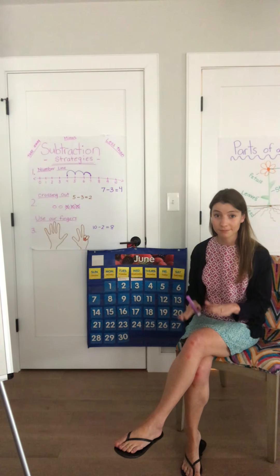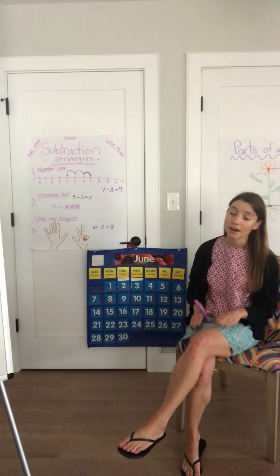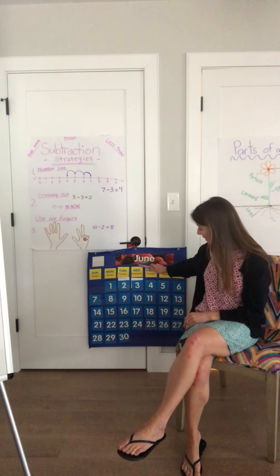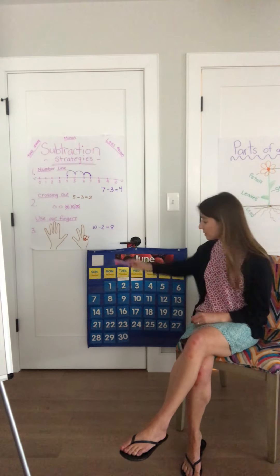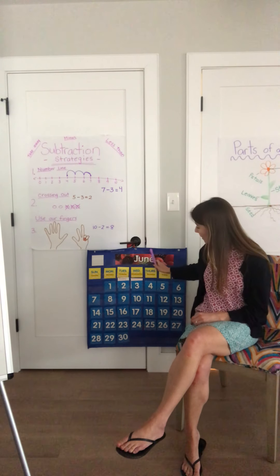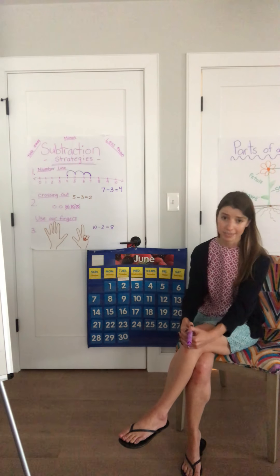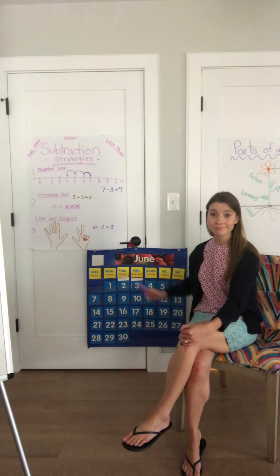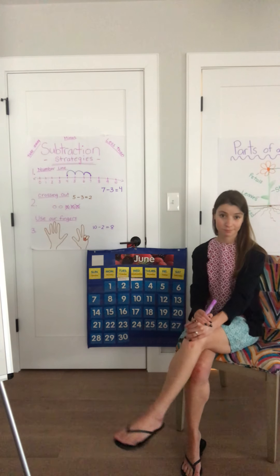Let's do our days of the week. Ready? There are seven days in a week: Sunday, Monday, Tuesday, Wednesday, Thursday, Friday, Saturday. Yesterday was Monday and today is Tuesday. Today is Tuesday, June 2nd, 2020. So we only have two numbers to count — ready? One, two. You just stop at the number two. Tuesday, June 2nd.